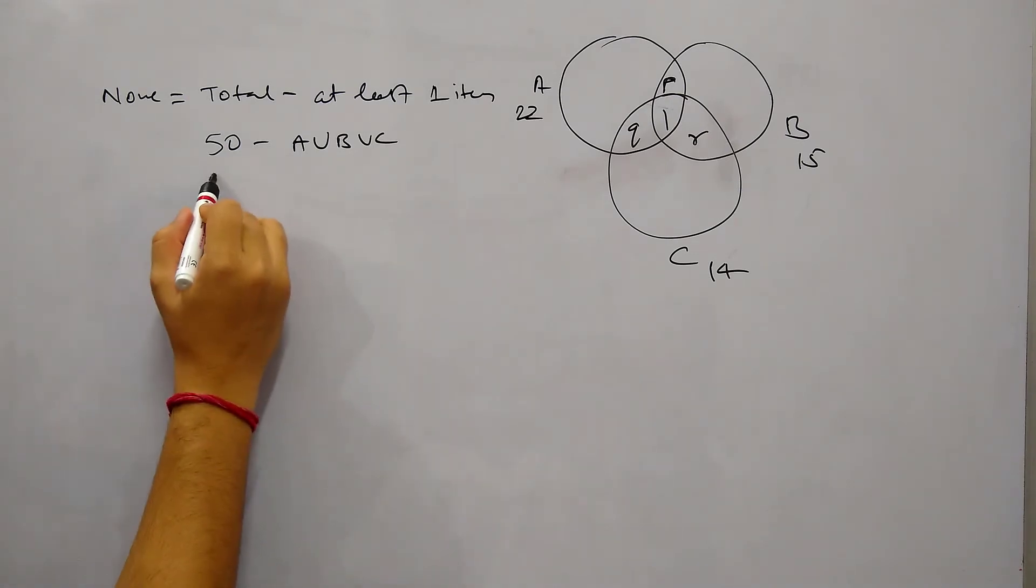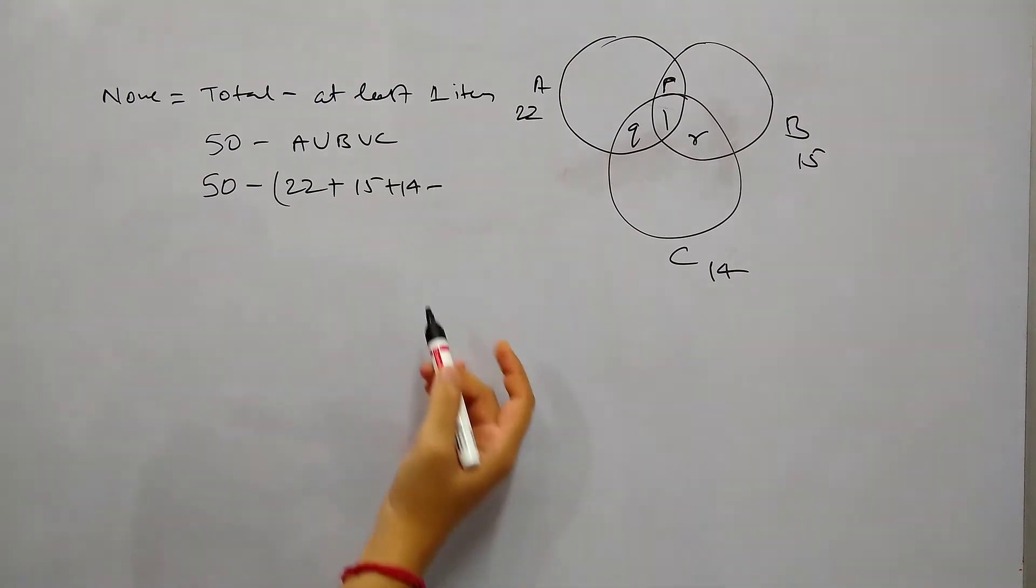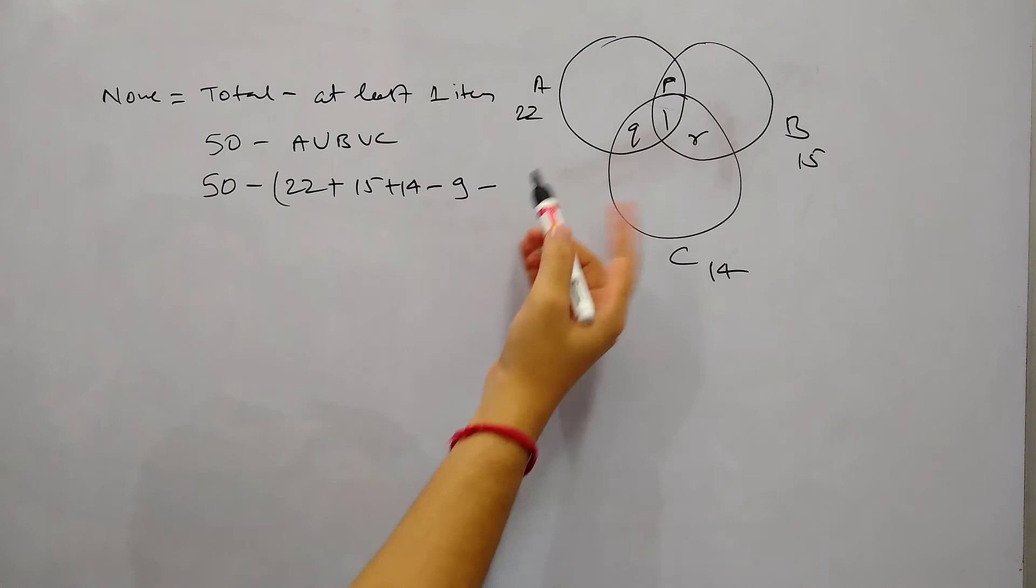If you know the formula you can directly put it here so 50 minus A union B union C will be 22 plus 15 plus 14, so this will be 51 minus 9 minus 2 into 1.